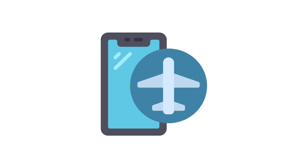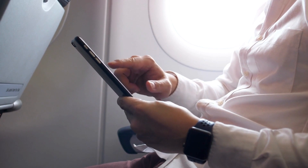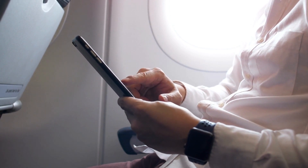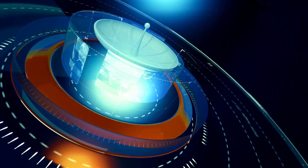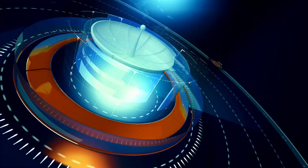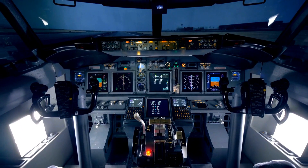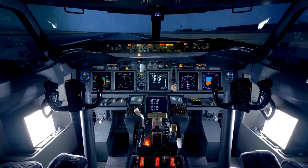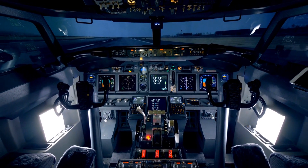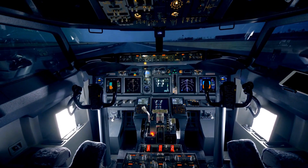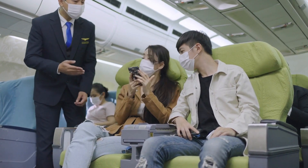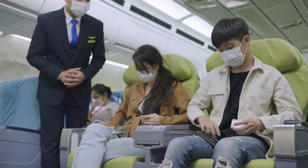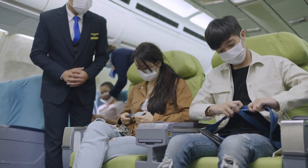However, what happens when a passenger doesn't switch their phone to airplane mode? In most cases, the consequences are relatively benign but can potentially lead to disruptions. When a passenger's device is not in airplane mode, it continues to emit electromagnetic signals that could interfere with the aircraft's systems. While the likelihood of such interference causing a serious problem is low due to the robust shielding and redundancy built into aircraft systems, it's considered best practice to minimize any risks. Flight attendants typically make announcements instructing passengers to switch their devices to airplane mode during takeoff and landing to ensure compliance with safety protocols.